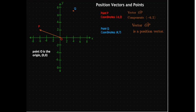Let's choose another point, Q, different from P. I chose the point 4 comma 7. We can also have a position vector for point Q. It's the vector OQ, and it has components 4 comma 7.